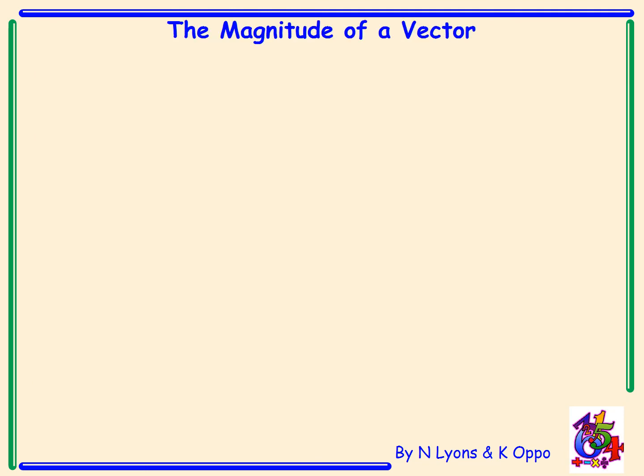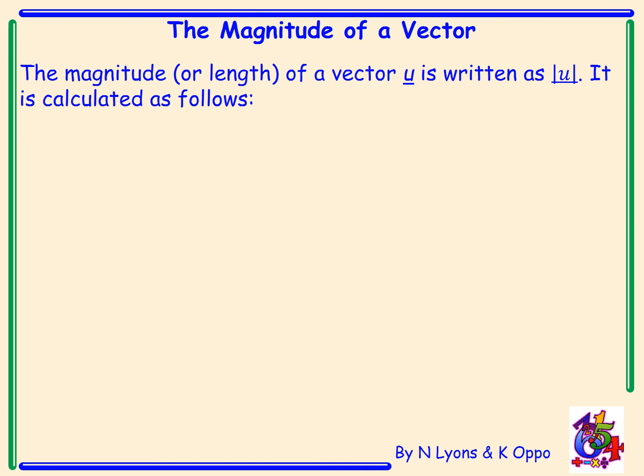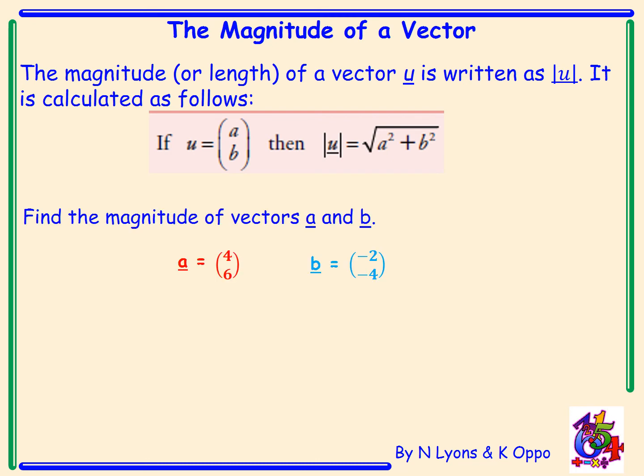The magnitude of a vector. The magnitude or length or size of a vector u is written as |u|. It is calculated as follows: we square each component, add them together, then take the square root. This is just like Pythagoras. Find the magnitude of vectors a and b. For vector a, we need to square 4, add on 6 squared. This will give us an answer of 52, 16 plus 36 will give us 52, and square root 52 will simplify to 2 root 13.